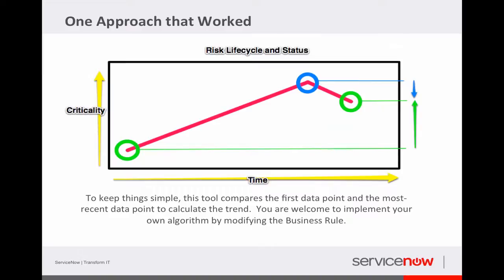That's kind of how I left it. What I did was I decided to take the start time and the current time and compare those, so anything that happens in regards to the criticality of the risk in the middle, I'm ignoring. I certainly welcome you to take the code that I have and implement your own algorithm. You can do that logic by modifying one business rule and have it work whatever suits your organization best.